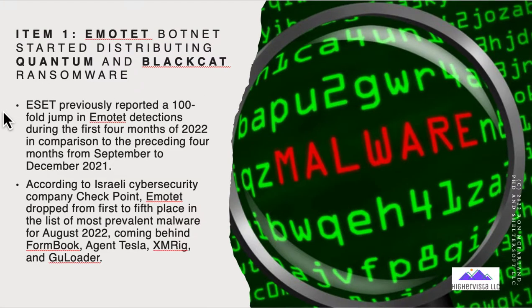ESET, another cybersecurity company, previously reported a hundredfold jump in Emotet detections during the first four months of 2022, compared to the preceding four months from September to December. However, the Israeli cybersecurity company Checkpoint noted that Emotet dropped from first to fifth place in August 2022. So even though Emotet took a hundredfold jump initially, other players are coming into play, including Formbook, Agent Tesla, XMRig, and GU Loader.